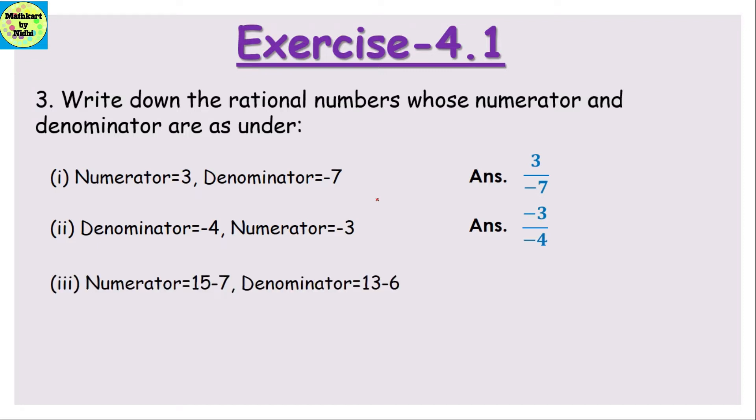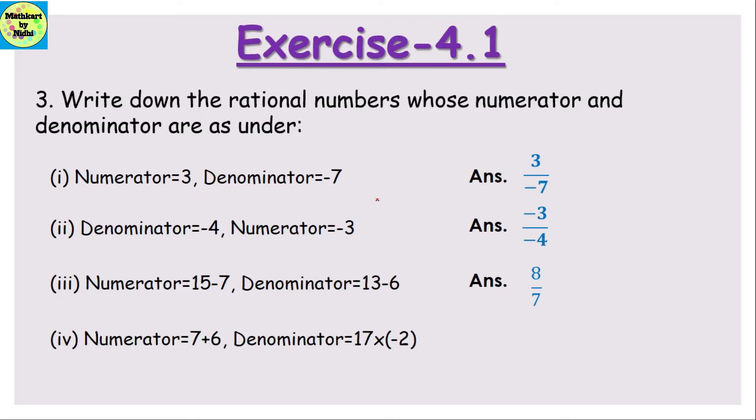Third part: numerator is 15 - 7 = 8 and denominator is 13 - 6 = 7, so the answer will be 8/7. Fourth part: numerator is 7 + 6 = 13 and denominator is 17 × (-2) = -34, so the answer will be 13/(-34).